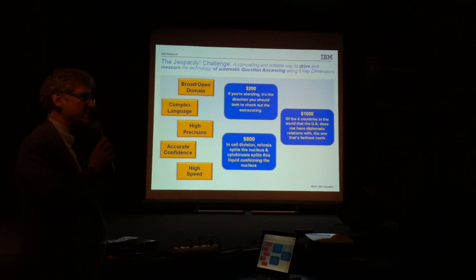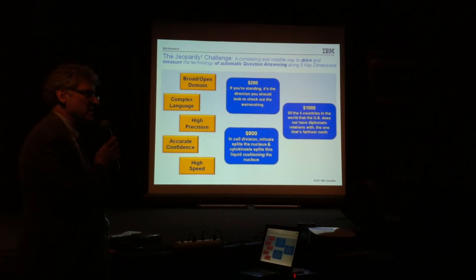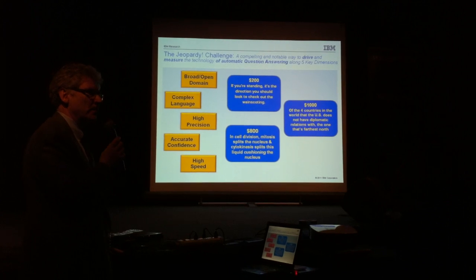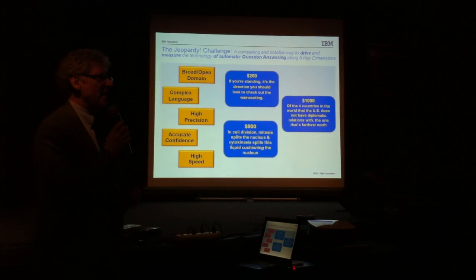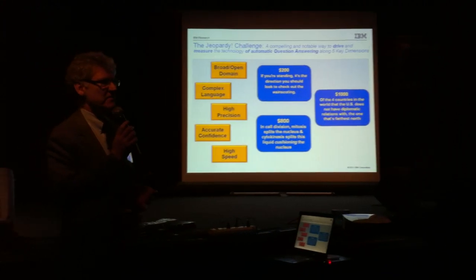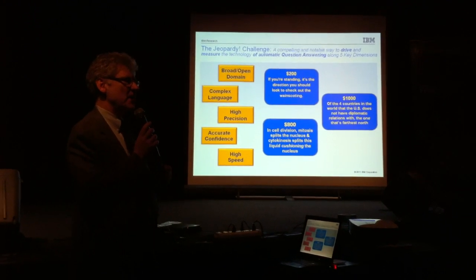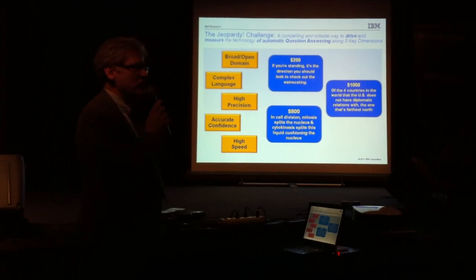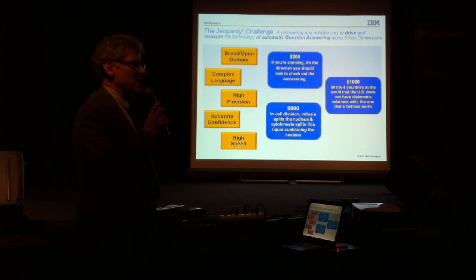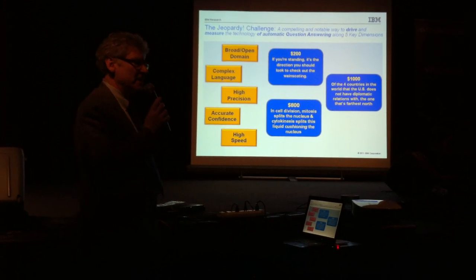Let's look at what the Jeopardy challenge entails. It entails five dimensions of performance that a system like Watson has to deal with. First, it's a broad, open domain. There are closed-domain question-answering systems that are easier to build because the vocabulary is restricted and the phrasing is restricted — much less of a natural language challenge. But with a broad, open domain, the language and subject matter could be just about anything.